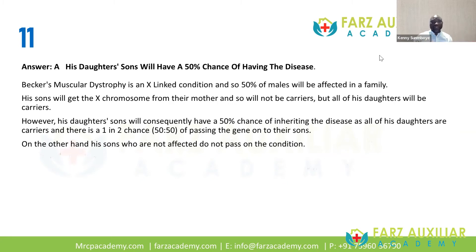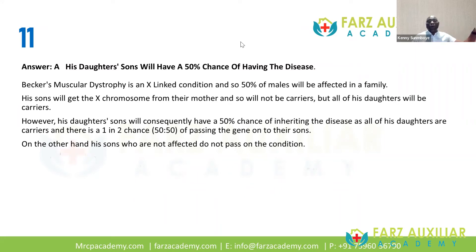You have autosomal dominant disease, autosomal recessive, and X-linked diseases — the information I've given here is very important for you to look at. For autosomal dominant diseases, once you have a defective chromosome you get the disease — whether you're homozygote or heterozygote doesn't matter. For autosomal recessive, you need two defective chromosomes — you need to be homozygous to have the disease.